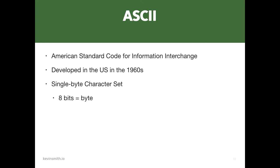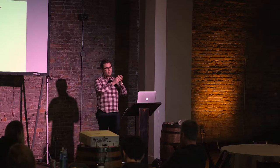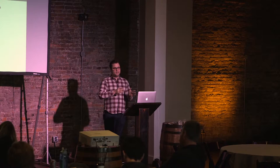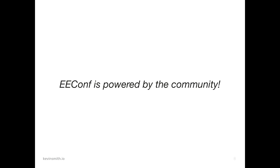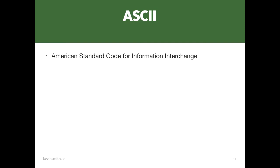It's very important to remember it was developed in the U.S., and it is a single-byte character set. A byte is eight bits — each one of those ones and zeros is a bit. Put eight together and you've got a byte. A single-byte character set means you need a byte — eight ones and zeros — to determine what one character is. There's a one-to-one relationship between those bytes and the character. That byte is the exclamation point, for example.